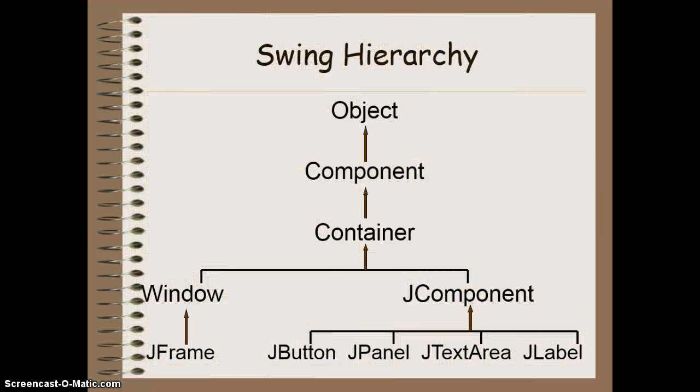In order to do that, we first have to look at the hierarchy of all the classes that exist in the Swing package. So basically the overriding object that exists, and this is for everything, is the object class. And this basically makes a basic object with a toString method and some other basic methods in there that we can inherit from.